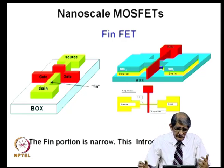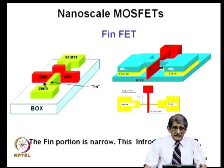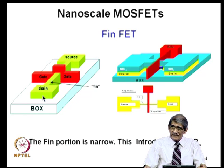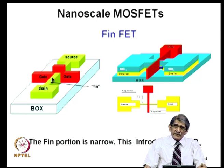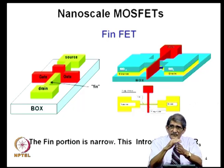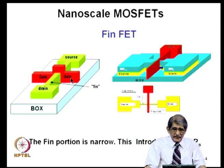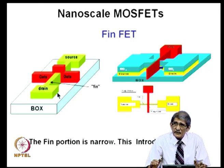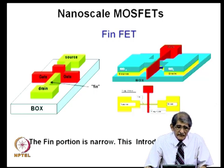What I want to highlight is that this fin portion is very narrow. Between the source and where the channel actually starts, this region is not inverted — it will be n-plus doped. But because this is very thin, you will have a lot of resistance: rho times L over A, where the area of cross-section for current flow is small. You have to make it thin because you want that layer to be very thin when the gate acts on it, so you cannot make it wider. That is where the series resistance problem comes in when you go to smaller and smaller scale MOSFETs.